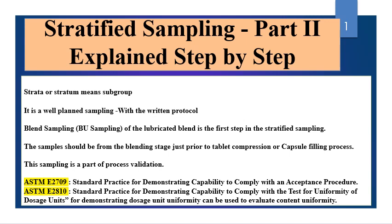Stratified Sampling is a process of sampling and getting confirmation on the planned uniformity and content uniformity in solid oral dosage forms like tablets and capsules. Earlier, the USP content uniformity test was being performed, and now the ASTM guidelines provide total information about Stratified Sampling. Nowadays, Stratified Sampling is a must for regulatory authorities for product filing.